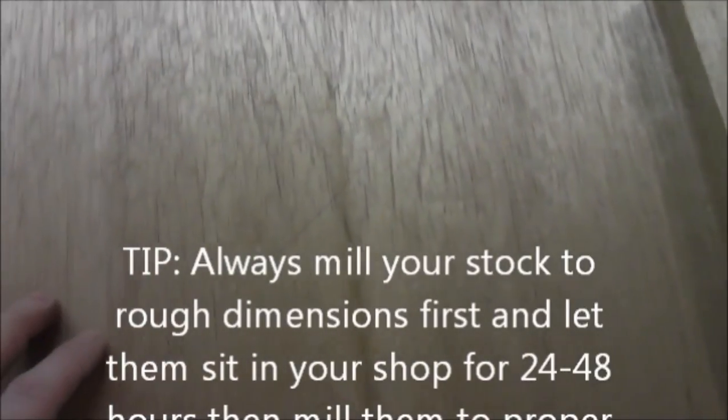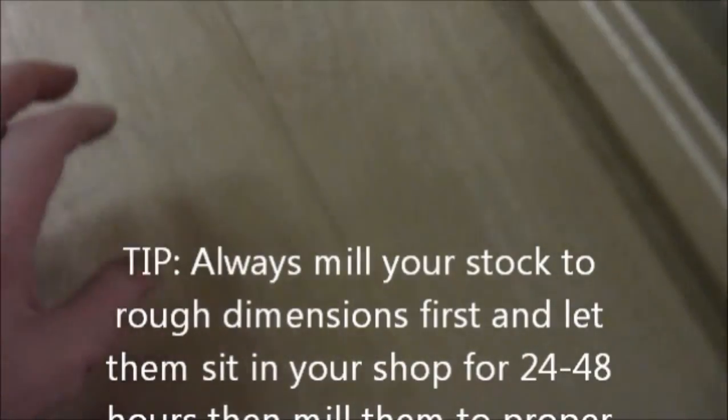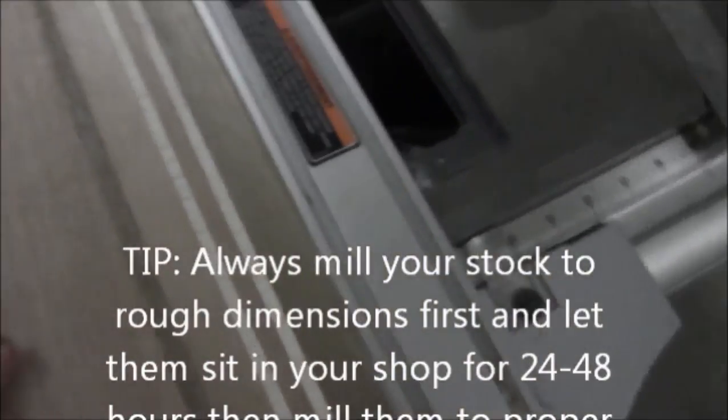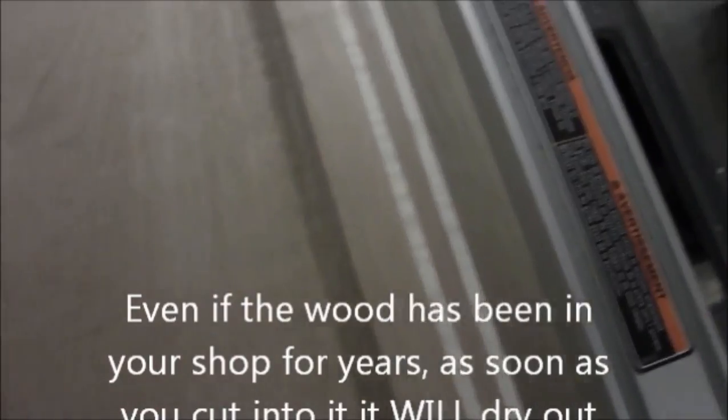Alright, we've got everything milled to size here. Here's our bookmatched back piece made out of Spanish cedar. We've got our body wings here, top and bottom, and we've got our lamination for our neck.